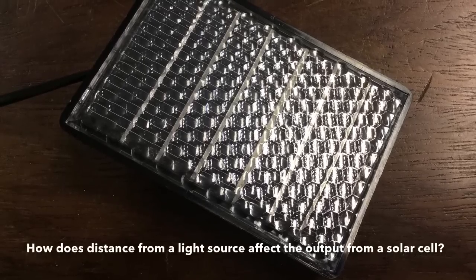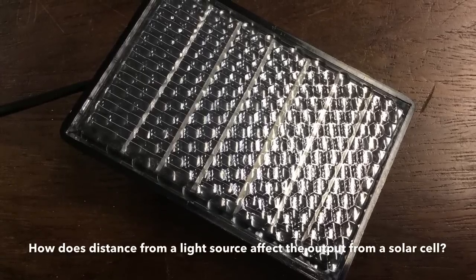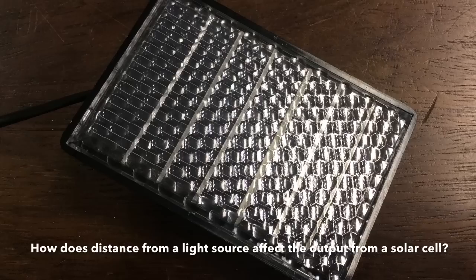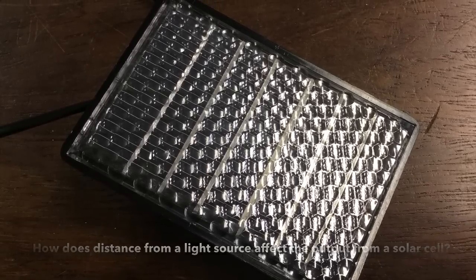In this experiment, you're trying to find out how the distance from the light source to the solar cell affects the voltage output from that solar cell.